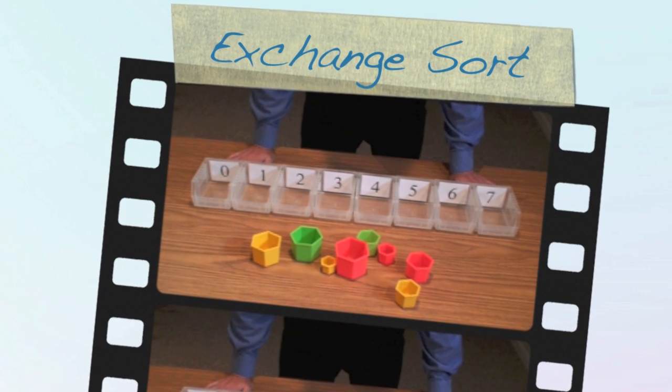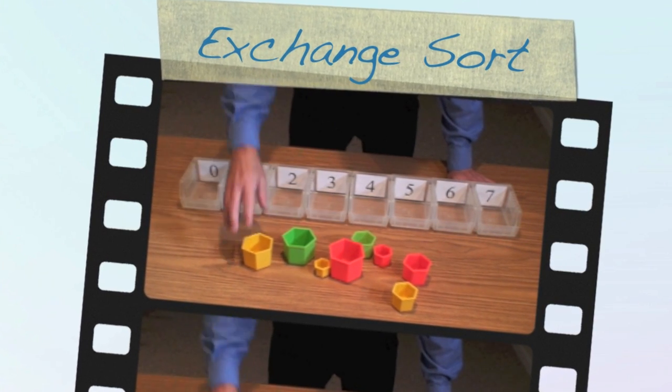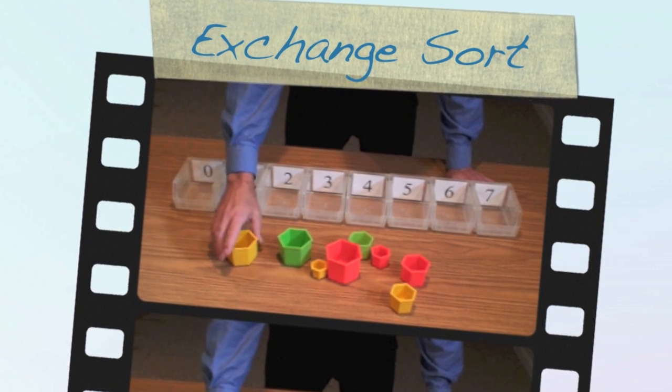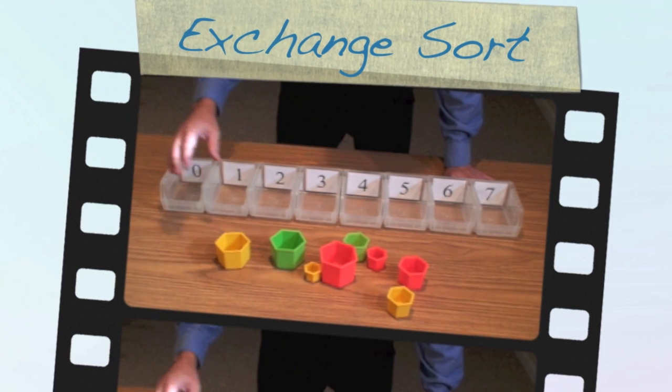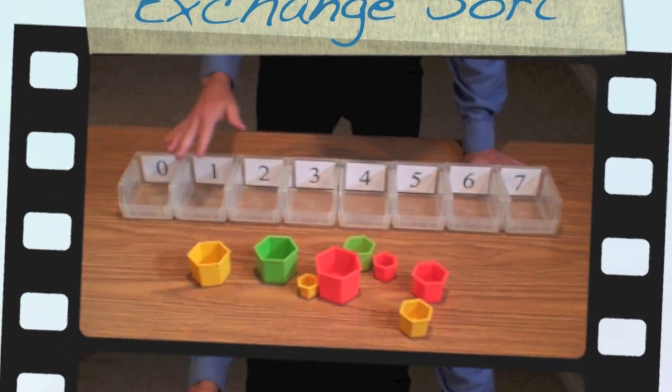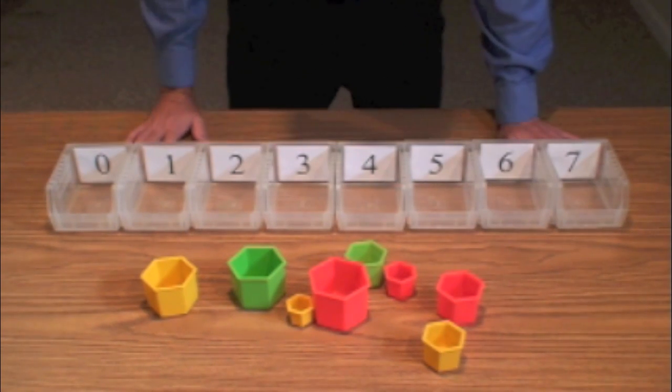Alright, today we're going to do the exchange sort algorithm. We're going to use these nesting cups and we're going to sort them by size. We're going to store them in these containers here.